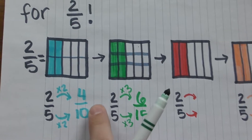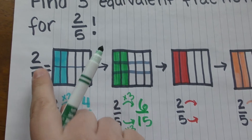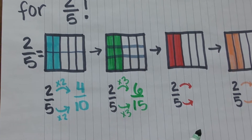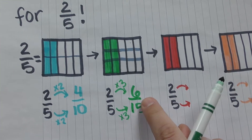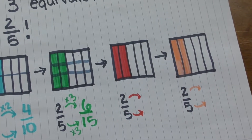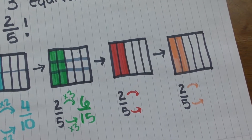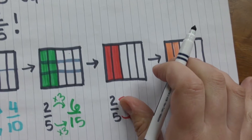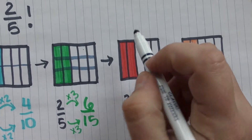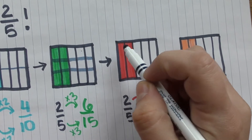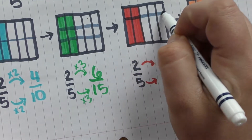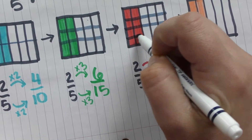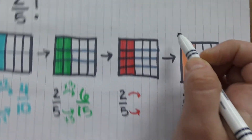So we found so far that two fifths is equal to four tenths and six fifteenths. Now if I want to cut this again, I'm gonna cut it into four equal pieces.